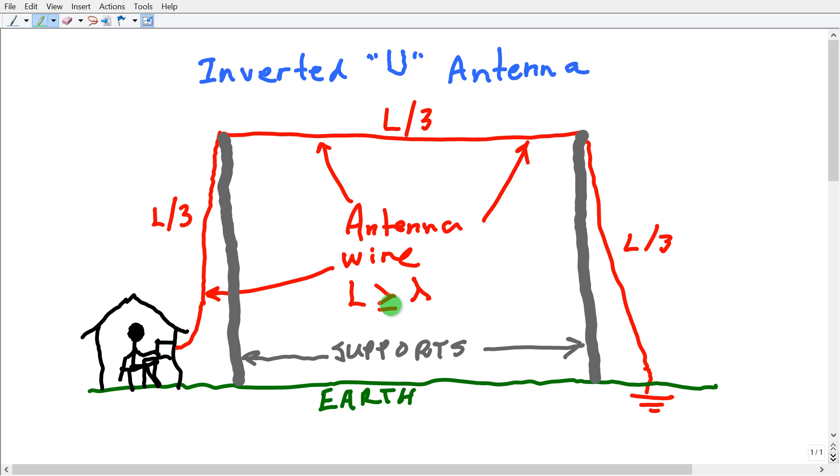The length has to be at least one wavelength. That means it can be longer. At 40 meters that would be 135 feet or thereabouts. Suppose you made one 180 feet long and you intended to operate it on all bands 40 meters and above.